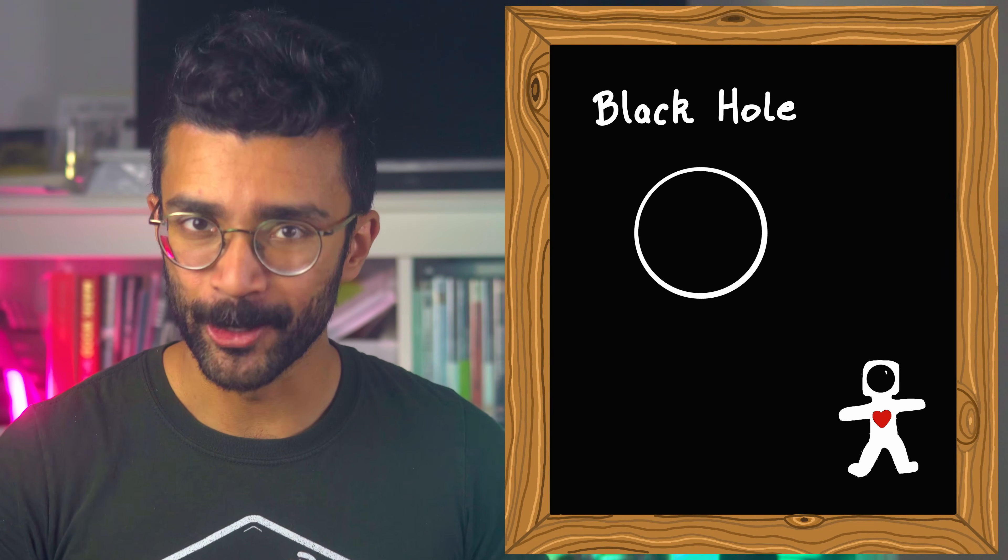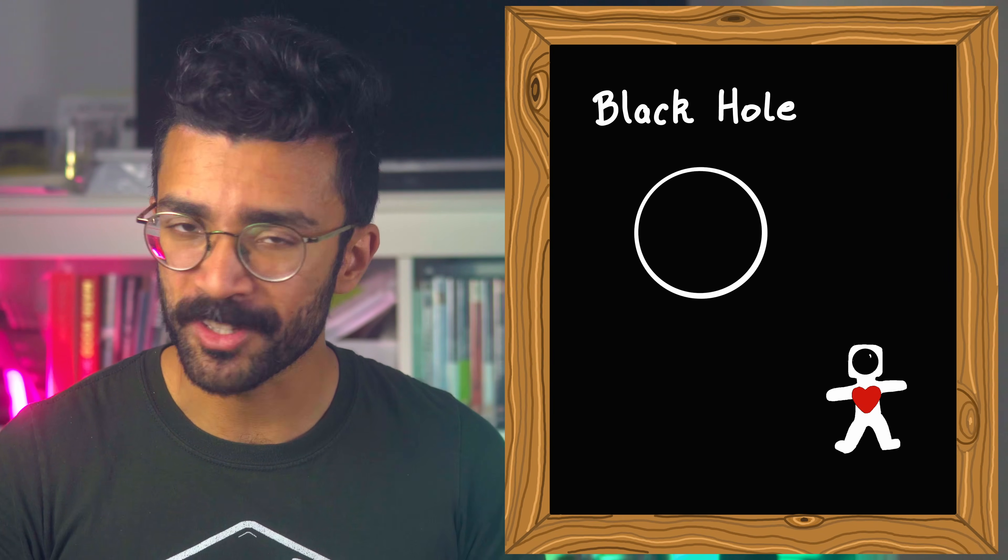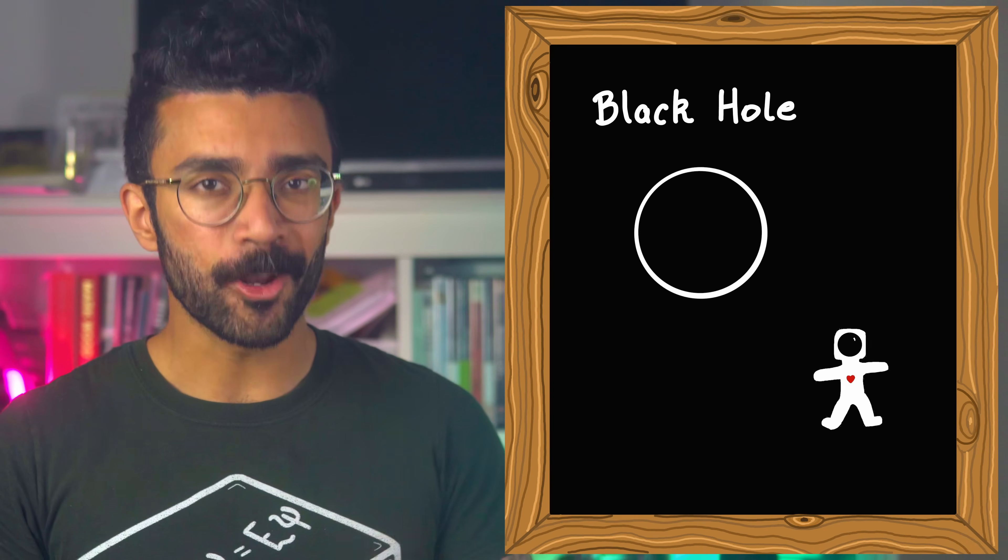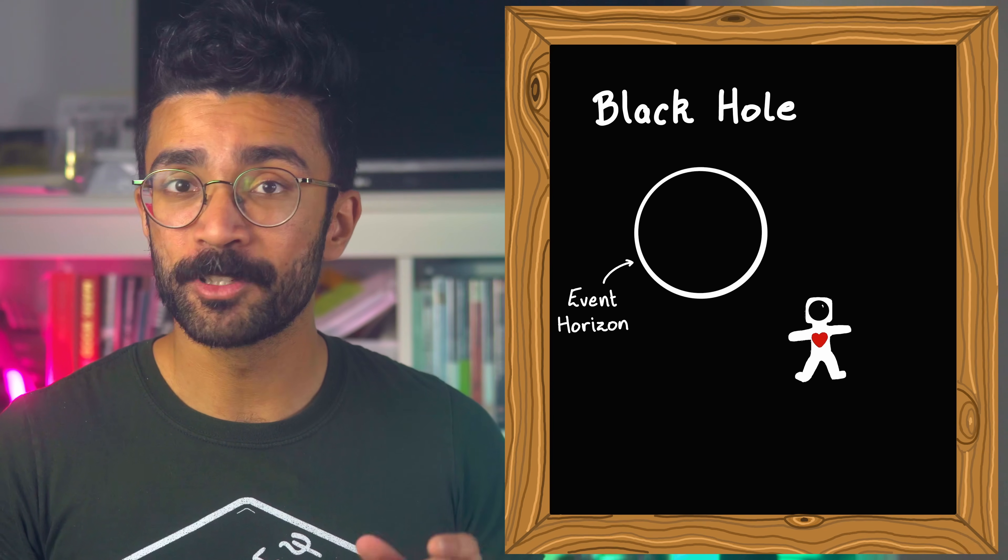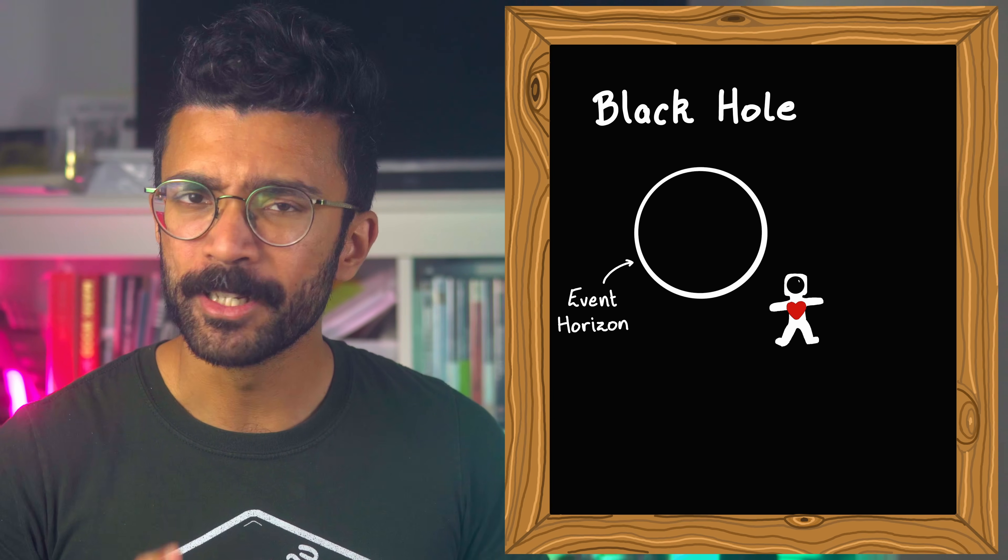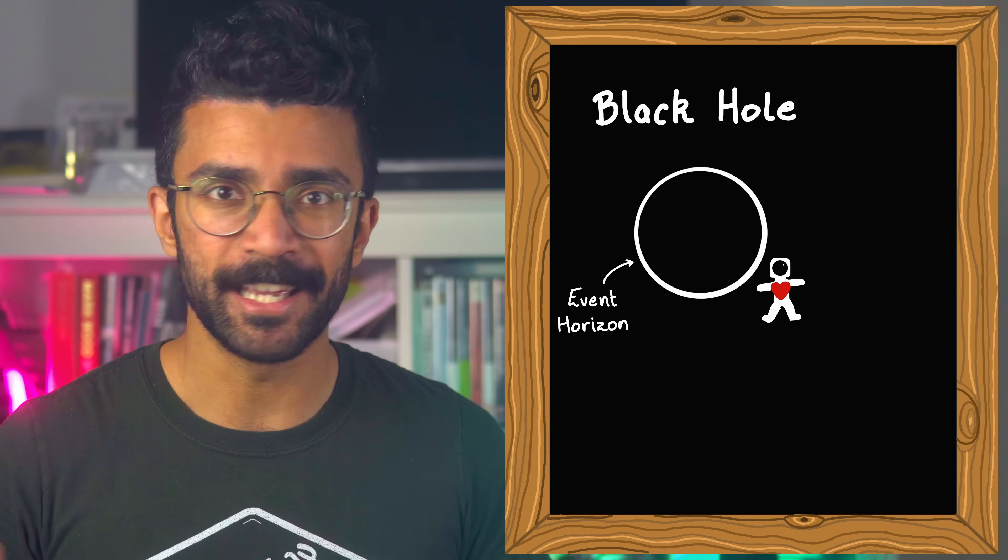If we were to look towards a black hole and watch someone falling towards it, we would see them getting closer and closer to the event horizon, and rather surprisingly we would see them slowing down more and more, but we would never ever see them falling in. Let's look at a simple diagram that helps us understand exactly why this happens.